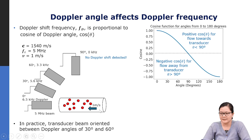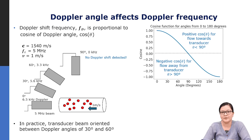In practice, what is typically done in the clinic is to keep the Doppler angle somewhere between 30 and 60 degrees for optimum estimates of the Doppler shift frequency.